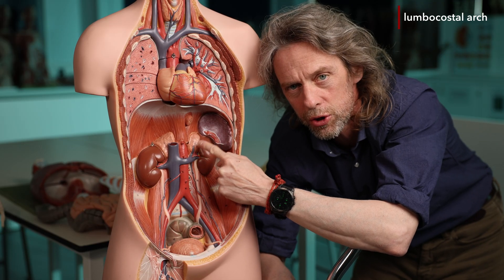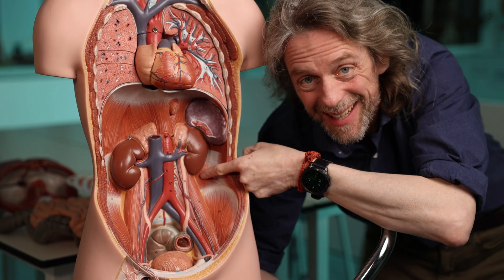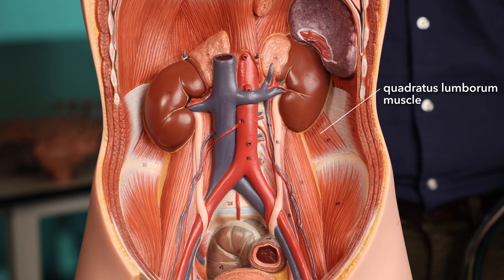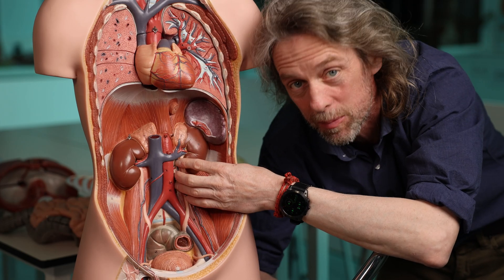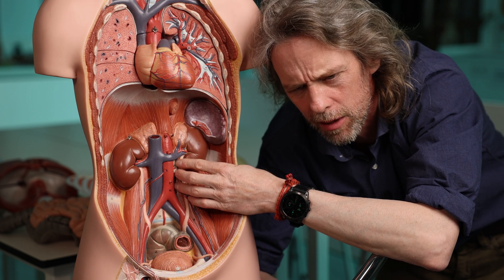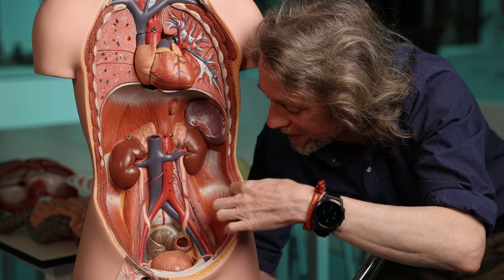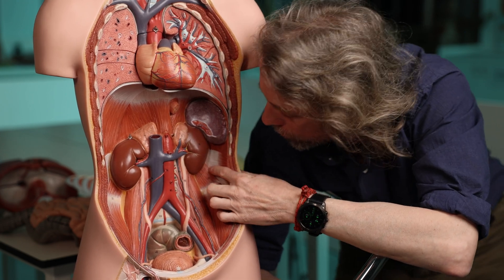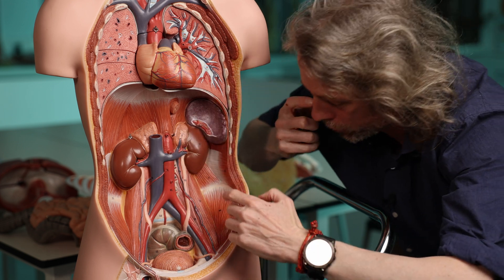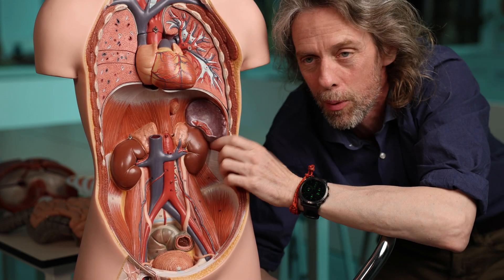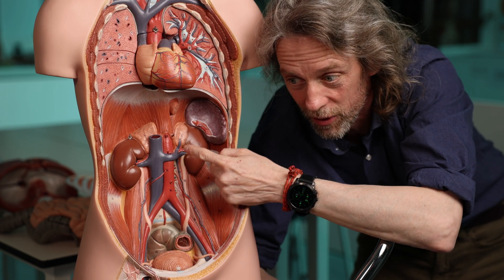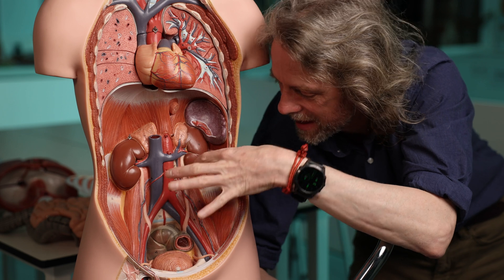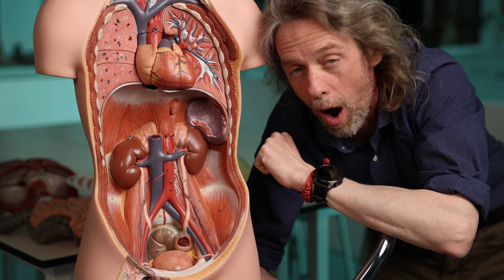The medial arcuate ligament is also called the medial lumbocostal arch. Quadratus lumborum is a muscle of the posterior abdominal wall running from the transverse processes of L1, L2, L3, and L4 vertebrae and the 12th rib out to the ilium of the pelvis. The diaphragm arches over quadratus lumborum because they overlap a little bit — running from the transverse process of L1 over quadratus lumborum to the 12th rib. That is the lateral arcuate ligament, also called the lateral lumbocostal arch.